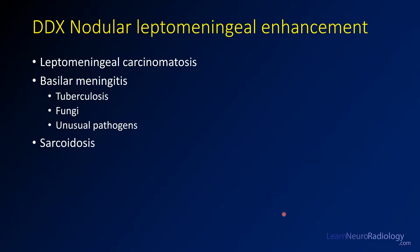The diagnosis here is one of nodular leptomeningeal enhancements, so you've got to think about some things in a differential. The number one thing you want to think about is leptomeningeal cancer or carcinomatosis. Things that cause basilar meningitis can also look like this, including unusual infectious agents like tuberculosis and fungi. Sarcoidosis is a major consideration here as well. So this is really a differential case.